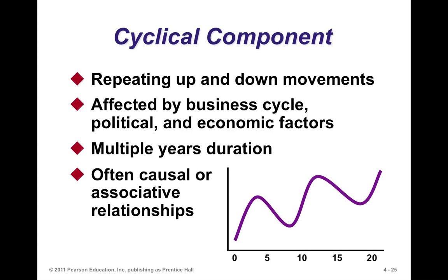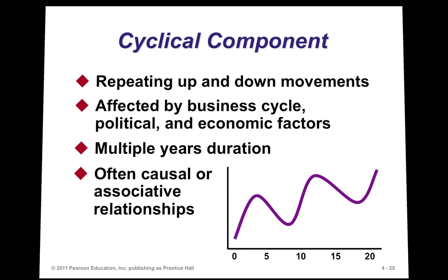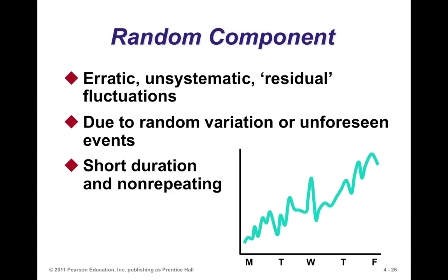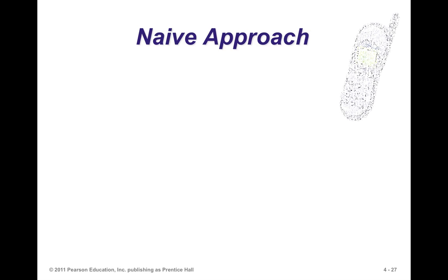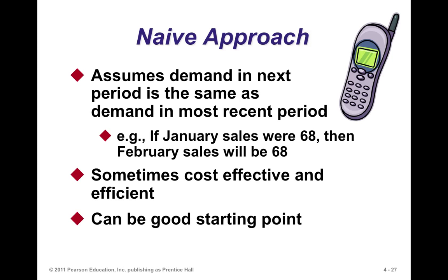The cyclical component is a repeating upward and downward movement across several years. The random component is what we simply cannot control or capture — we know it exists, but we really can't predict it.